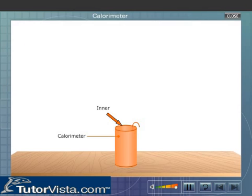The inner and outer sides of a calorimeter are polished to avoid heat loss due to radiation.